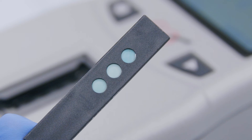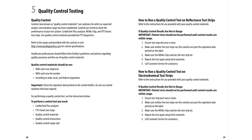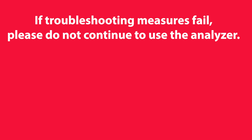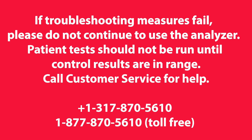If your results are not within range, check the back of the lipid panel test strip to make sure that the three circles are completely colored. If they are not completely colored, you might not have applied enough control solution. See the quality control testing section in the CardioCheck Plus Version 1.12 User Guide for more troubleshooting tips. If troubleshooting measures fail, please do not continue to use the analyzer. Patient tests should not be run until control results are in range. Call customer service for help.